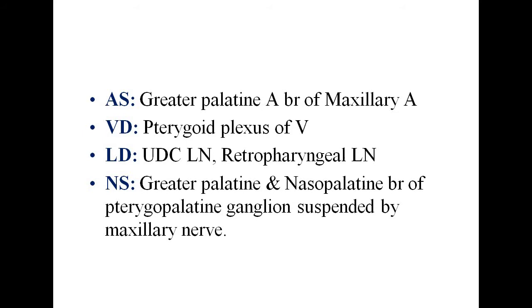If you examine a patient and ask them to open their mouth, you can see all these structures. These are the teeth and this is the hard palate. The posterior part which is moving is the soft palate, made up mainly of muscles. These small elevated things popping out are the tonsils. This arch is called the palatoglossal arch.